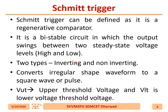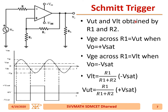The two types are the inverting and non-inverting Schmitt trigger, which converts an irregular shape waveform into a square or pulse wave. V_UT is the upper threshold voltage and V_LT is the lower threshold voltage. V_UT and V_LT are obtained from the R1 and R2 resistor divider. V_LT equals (R1 / (R1 + R2)) × (−V_sat) and V_UT equals (R1 / (R1 + R2)) × (+V_sat).